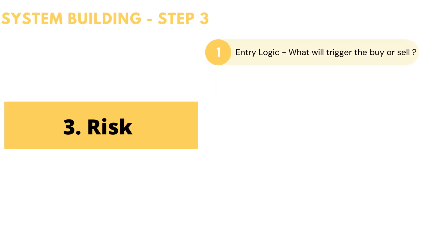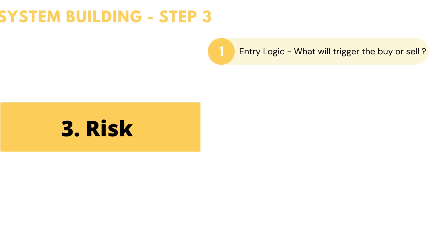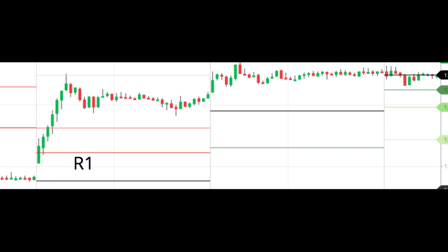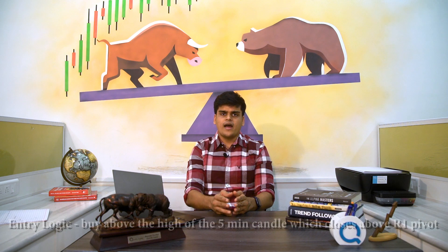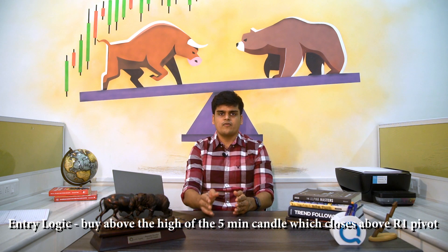The third step actually has five sub-steps. The first is entry logic — what will trigger your buy or sell? It should be predefined and written in simple language. For example, what if I buy a stock which has closed above the R1 pivot in the five-minute timeframe intraday? My entry logic is: buy above the high of the five-minute candle which closes above the R1 pivot. This is a clear entry logic.